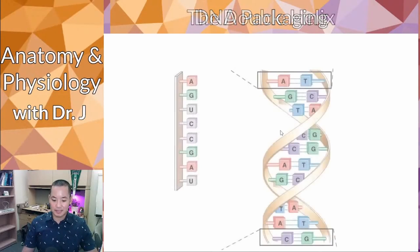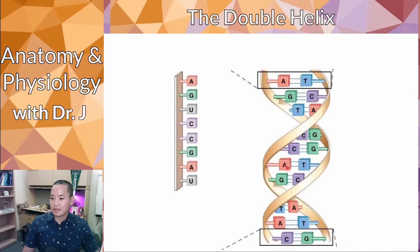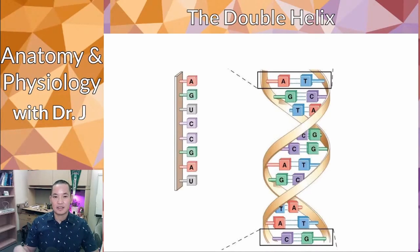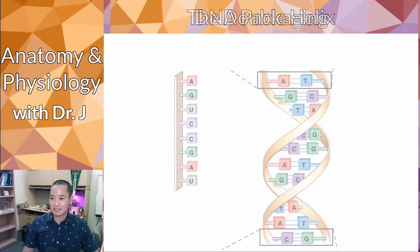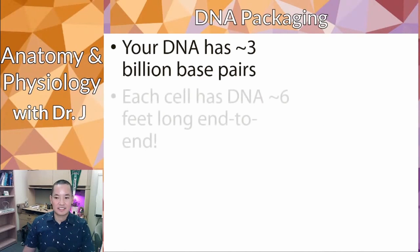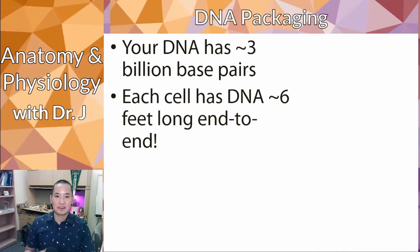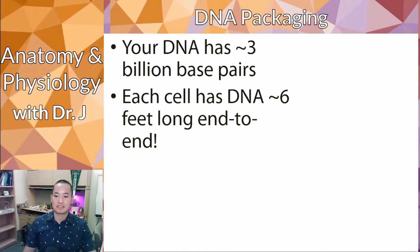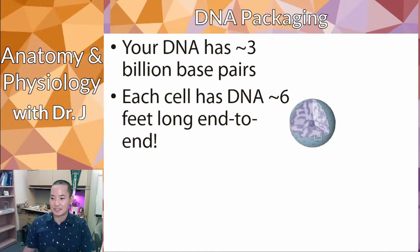Each of these pairings is one base pair, and you actually have about three billion of these pairings in just one nucleus. If you took all the DNA — all the chromosomes inside just one nucleus — and stretched it out end to end, it would be about six feet long.